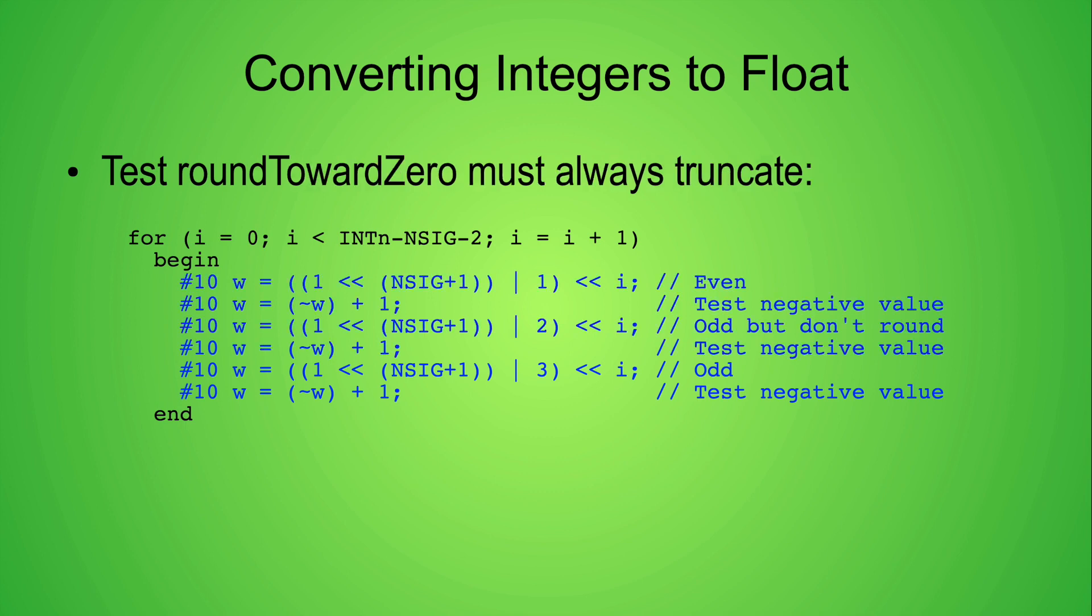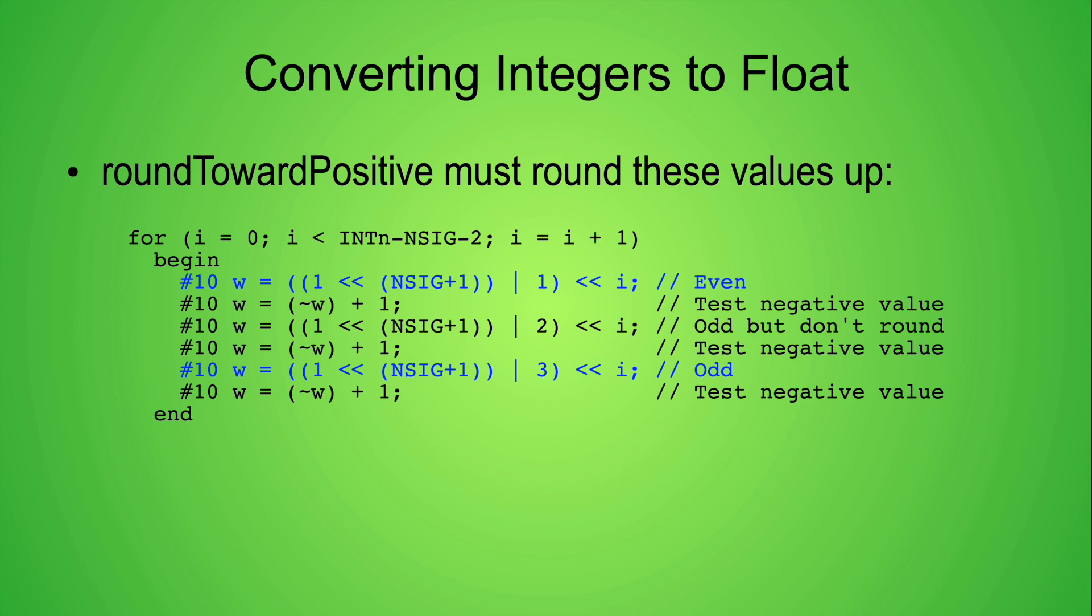For the round toward zero rounding mode, we always truncate all three pairs to their 24-bit value. For the round toward positive rounding mode, the positive values in the first and third pairs will always be rounded up, and the negative values truncated. For the round toward negative rounding mode, the negative values in the first and third pairs of significands will always be rounded up to f plus 1, which will make the binary32 result more negative, that is, closer to negative infinity. And the positive values will always be truncated.